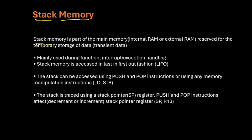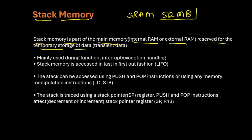A stack memory is a part of main memory — that is nothing but internal RAM or external RAM — reserved for temporary storage of data. In ARM Cortex-M4, there is one SRAM of 512 MB. This 512 MB is used for storing data, and one particular portion of it is dedicated for stack memory for storing temporary data.